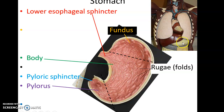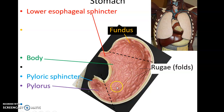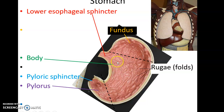Here is the stomach in the abdominal cavity. The very beginning is the lower esophageal sphincter, which prevents stomach contents from going back into the esophagus. The stomach is divided into regions: the top hump is the fundus, the largest portion is the body, and the inferior tail end is the pylorus, which ends with the pyloric sphincter — controlling movement of stomach contents into the small intestine. The folds on the inside of the stomach are called rugae (one rugus, many rugae), which allow the stomach to stretch as it fills.